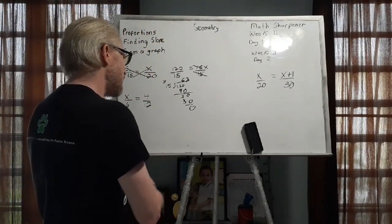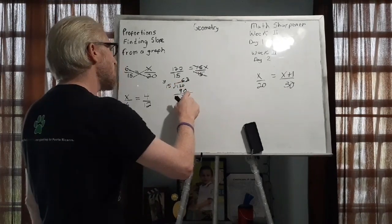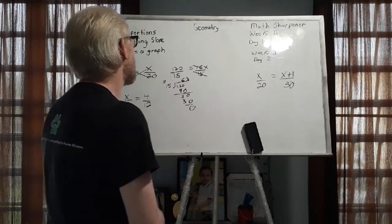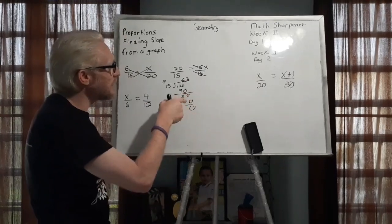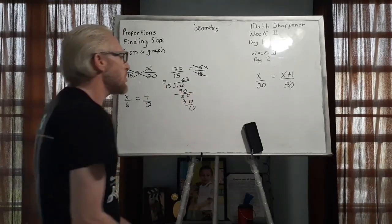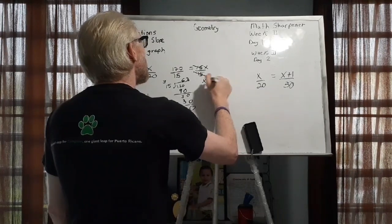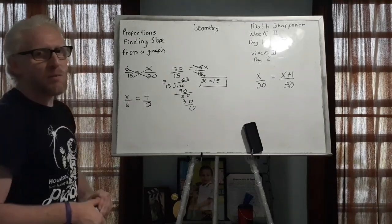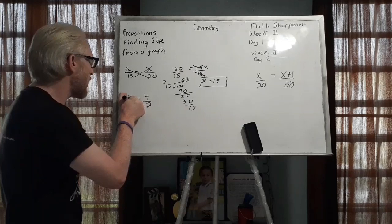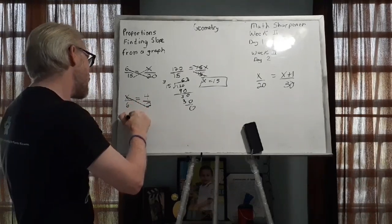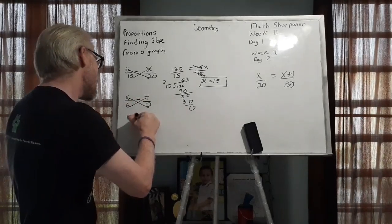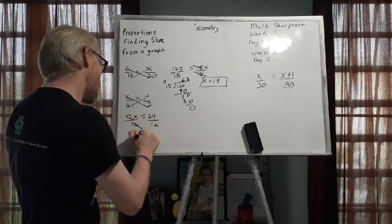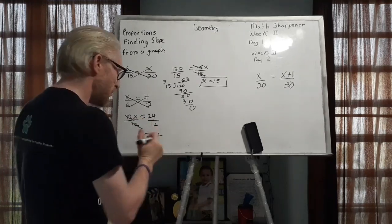You can always check your answer by plugging in the result. Now we're going to do the next proportion — this one you could do mentally, but we're going to continue using cross multiplication. We have x times 12, which is 12x, and 6 times 4, which is 24. Dividing both sides by 12, x equals 2.